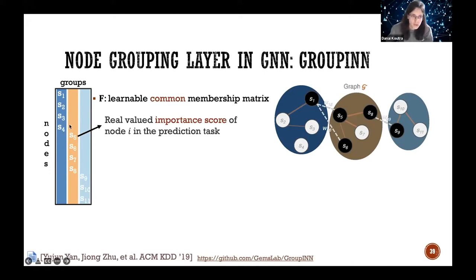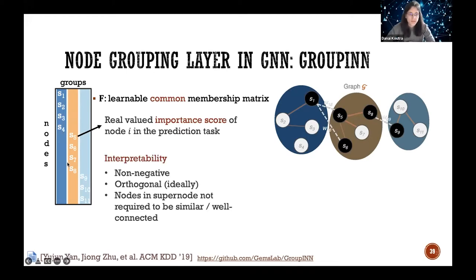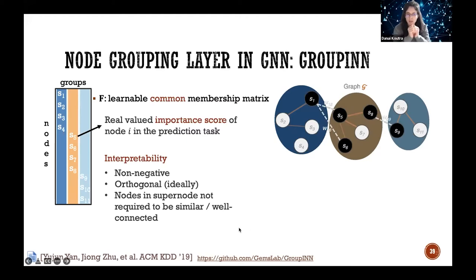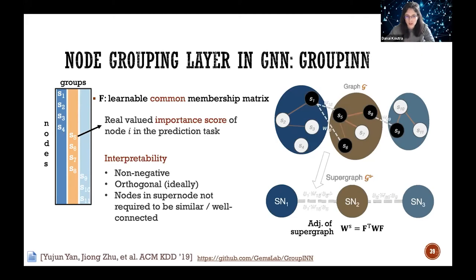We learn a common membership matrix describing the super graph — which nodes belong to which groups. It's not just a binary membership matrix, but has real-valued importance scores computing how important each node is for the prediction task. For interpretability, we impose constraints like non-negativity so scores are positive and meaningful, and orthogonality so nodes belong to one super node each. One difference from other grouping approaches is that nodes in these super nodes do not have to be well-connected, since the grouping is learned to help the downstream task.